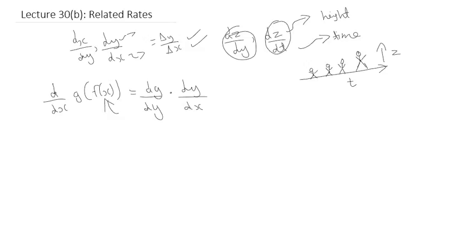This represents the chain rule, which can be applied to two or more variables. We can derive an equation using the chain rule by considering three specific variables. If I want to find dy/dx and I have values for dy/dt and dx/dt, there is a way to use these two values to find dy/dx.